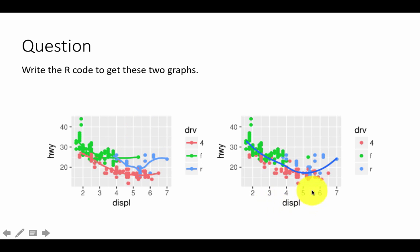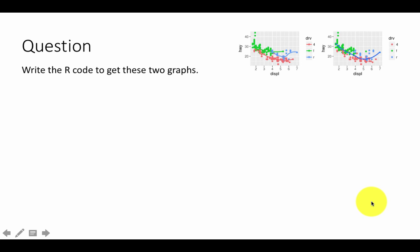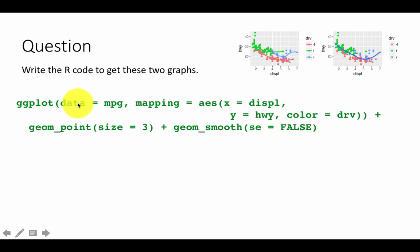For the second plot, everything is the same except we would prefer not to put color in the ggplot call, because that will also flow through to geom_smooth, which we don't want. So in this case we put the x and y coordinates in the ggplot call, but in geom_point we put color = drive inside the aesthetic, and outside the aesthetic we put size = 3, because size is not determined by any variable — it's fixed. For geom_smooth, all we say is se = FALSE. So: ggplot x = displacement, y = highway, then geom_point(size = 3) and geom_smooth(se = FALSE).